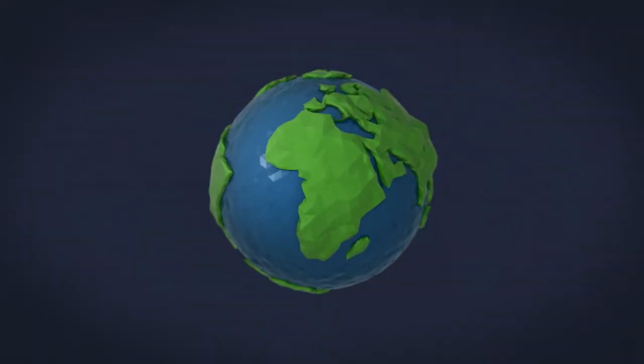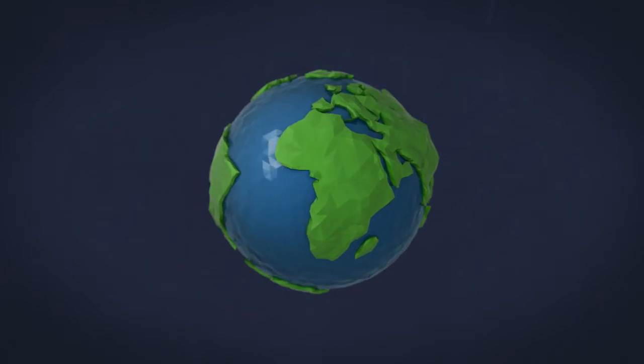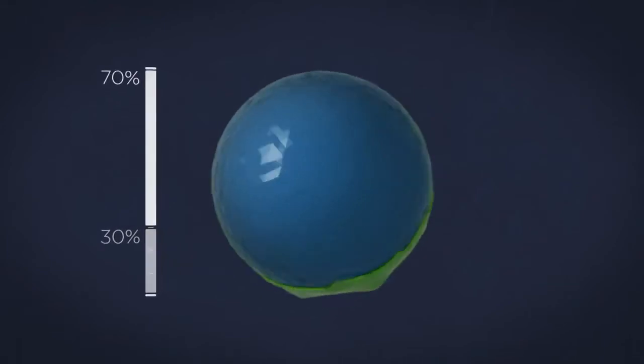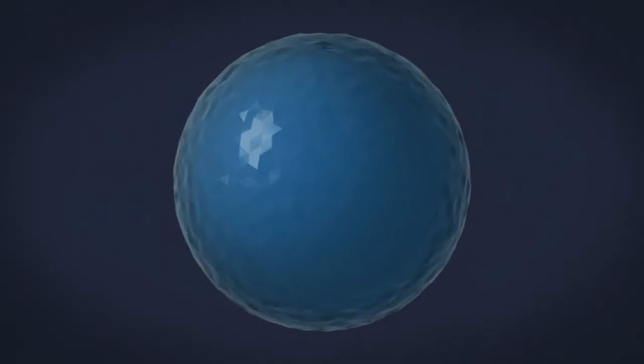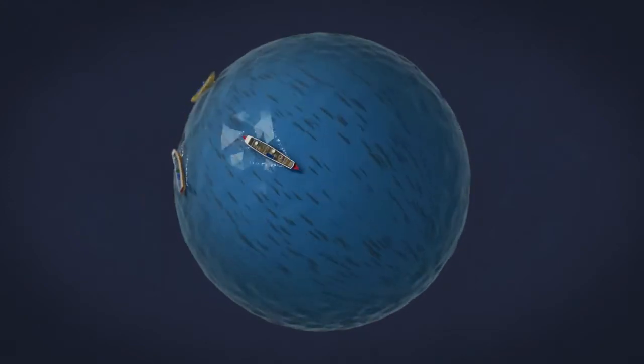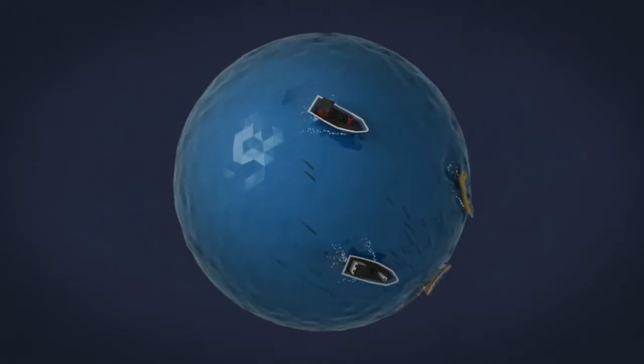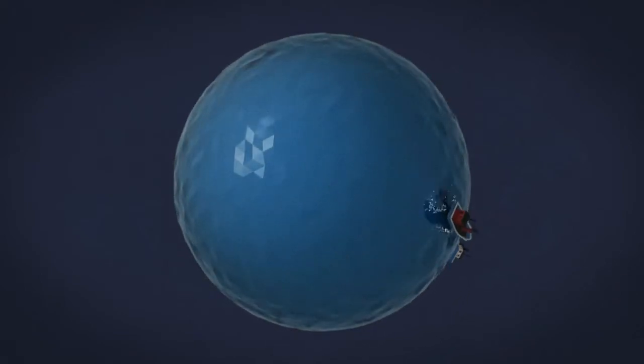On Earth, there are currently 7 billion people living on 30 percent of its surface, and all of them are dependent on the remaining 70 percent—the ocean. The ocean is the largest source of food in the world. Fish is the main daily source of protein for 1.2 billion people, but fishers are more and more frequently returning home with empty nets.